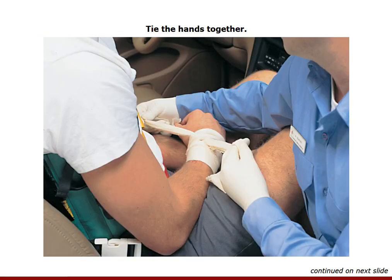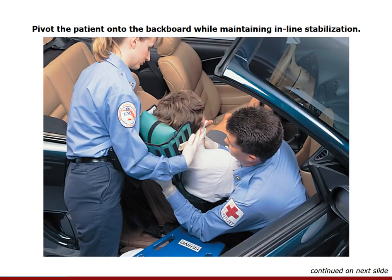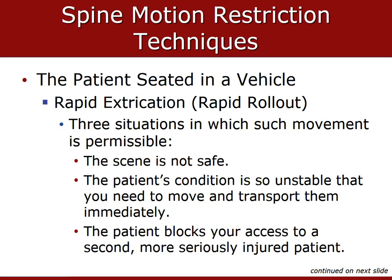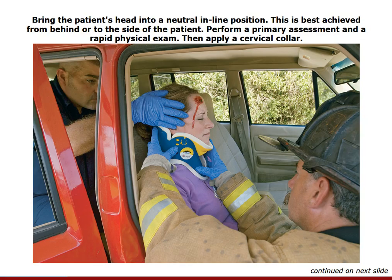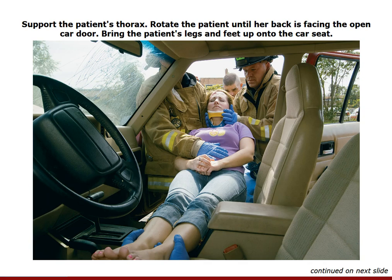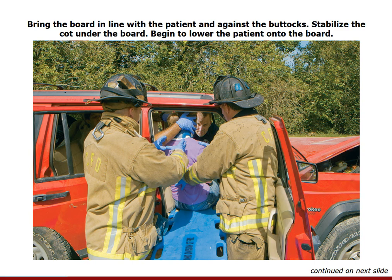Tie the hands together and pivot the patient onto the long backboard while maintaining manual inline stabilization. Position the board under or next to the patient's butt and rotate them until their back is in line with the backboard. Release manual inline stabilization only when the patient is completely secured. Assess pulse, motor, and sensory and record findings on the pre-hospital care report. Release the leg strap so the legs can be laid flat on the board. Rapid extrication is permitted when the scene is not safe, when the patient is unstable and needs to be moved immediately, or the patient blocks access to a second more seriously injured patient. If rapid extrication is needed, the patient is brought into alignment with manual inline stabilization, a cervical collar is applied, and a long backboard is positioned next to the patient. The rapid extrication technique requires EMTs to improvise at the scene.